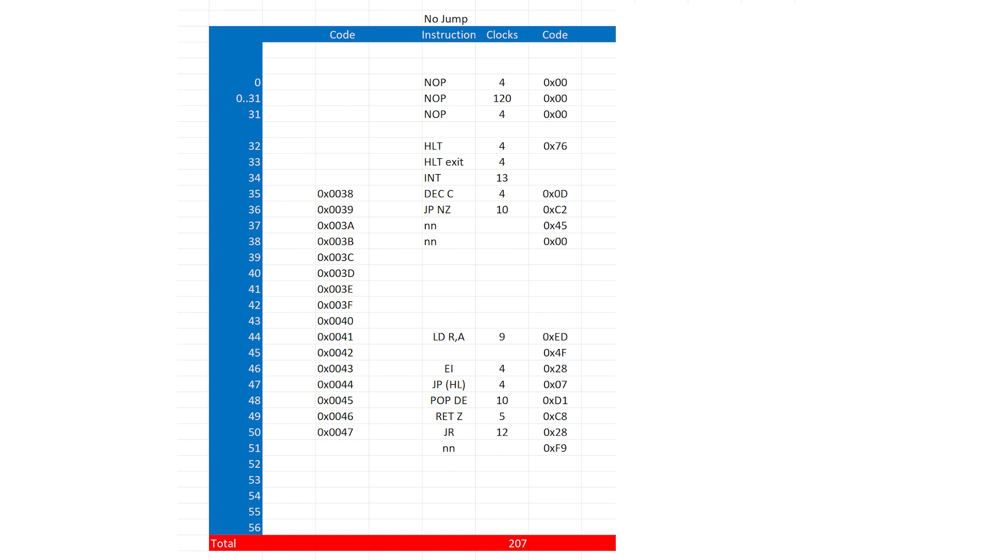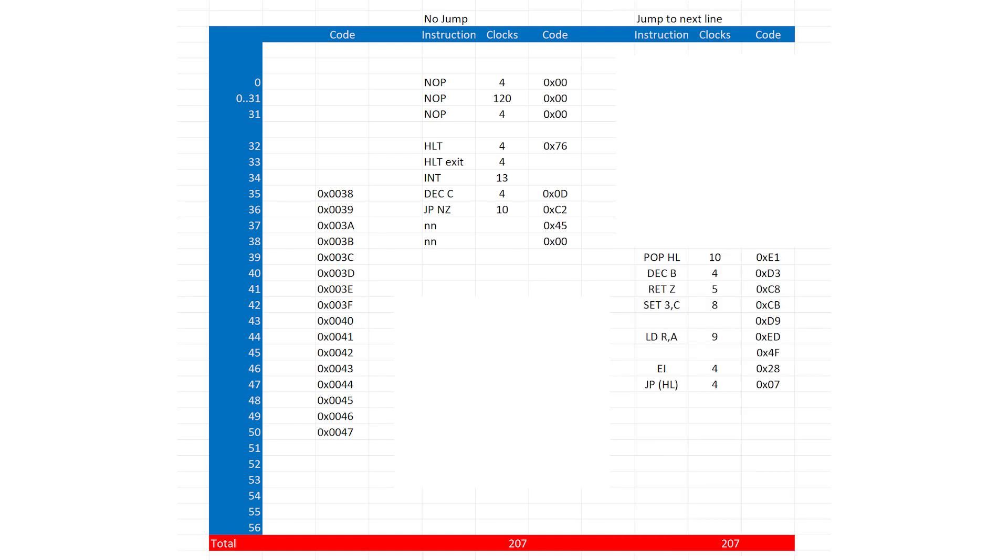If we've already done the bottom scanline for the current row of text, then we don't perform the jump at location 39. We pop HL, which starts us at the next row of text in the display file.